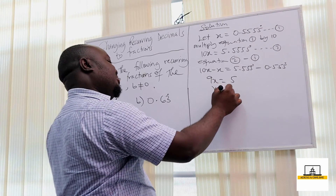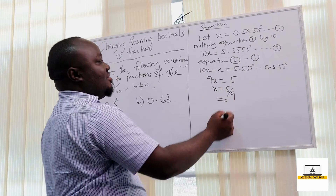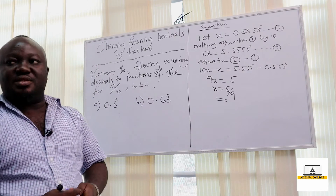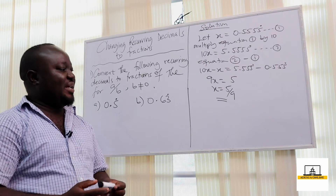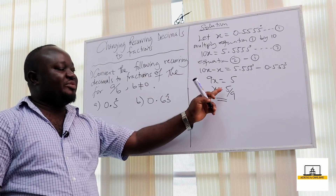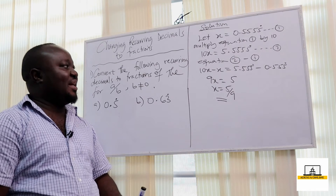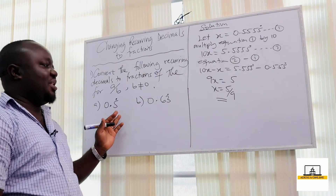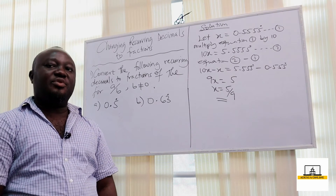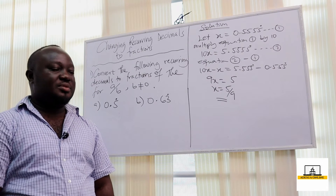So x equals 5 over 9. That is our fraction: 5/9. To check your answer, punch 5 over 9 into your calculator and confirm it gives 0.55555..., which is the recurring decimal we started with.